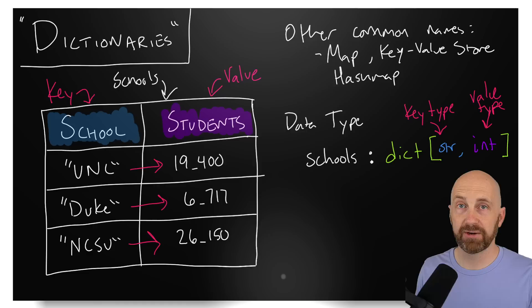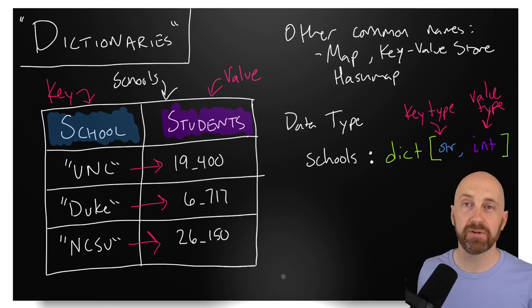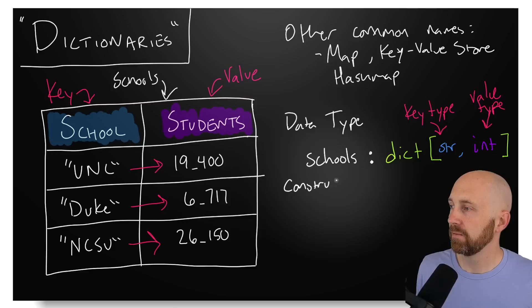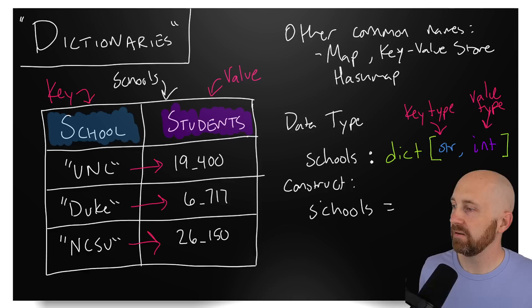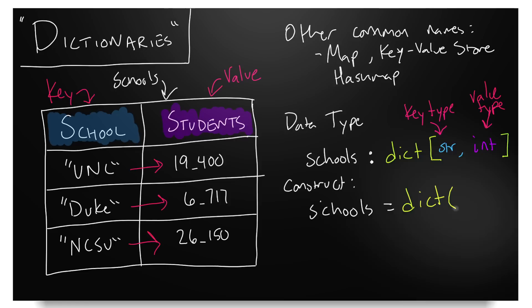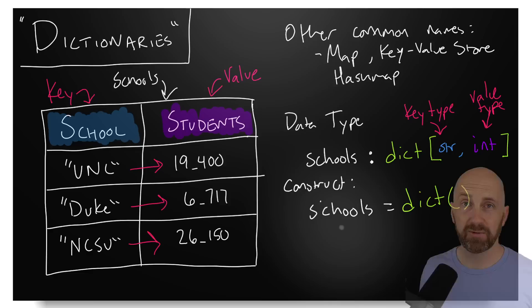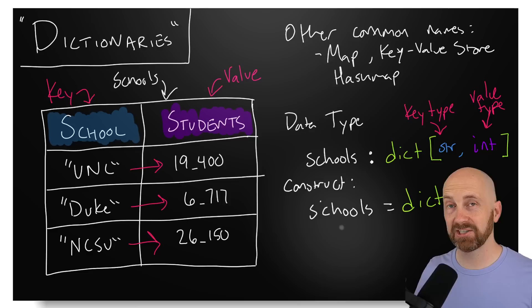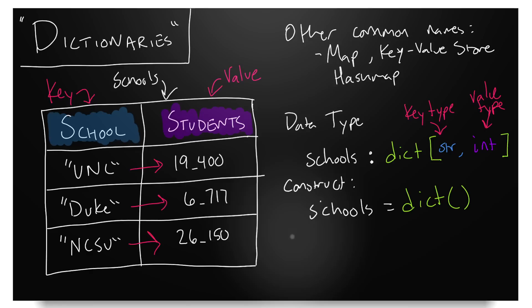Now that we can represent the type, how can we initialize an empty dictionary? Just like with lists and every other type, there's a constructor we can use — that's the most direct way. There's also a type literal we can use. The built-in function 'dict()' constructs a blank new dictionary on the heap and associates 'schools' with it. Just like lists, dictionaries are reference types and we can mutate them.